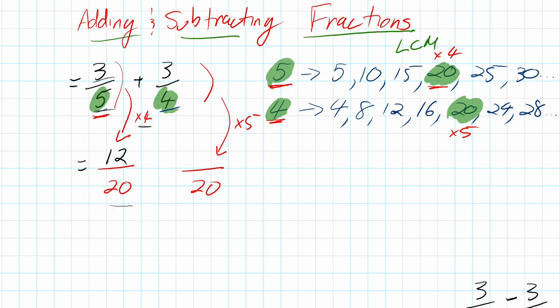We do the same thing here. 4 times 5 gives us 20. So we do the same to the numerator: 3 times 5 gives us 15. I'm going to carry down the same operation we had before, which is addition.